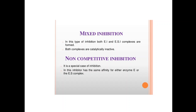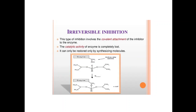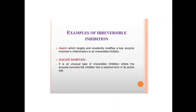In non-competitive inhibition, the inhibitor can bind to either the free enzyme or to the enzyme after substrate has bound. Irreversible inhibition involves the covalent attachment of the inhibitor to the enzyme — once attached, it cannot easily be removed. The catalytic activity of the enzyme is completely lost and can only be restored by synthesizing new enzyme molecules. Example: aspirin, which covalently modifies a key enzyme involved in inflammation, is an irreversible inhibitor.